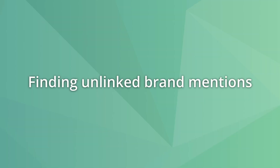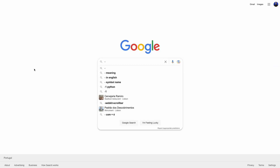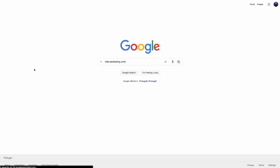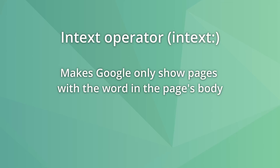You can also use search operators to find mentions of a brand on other websites. Going after unlinked brand mentions can be a somewhat easy way to earn backlinks, so use this expression to find them: -site:yourdomain intext:"your company name". The intext operator makes Google only show pages with the specified word or words in the body of the page.